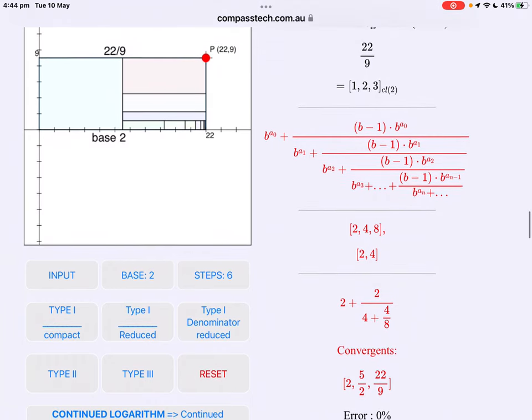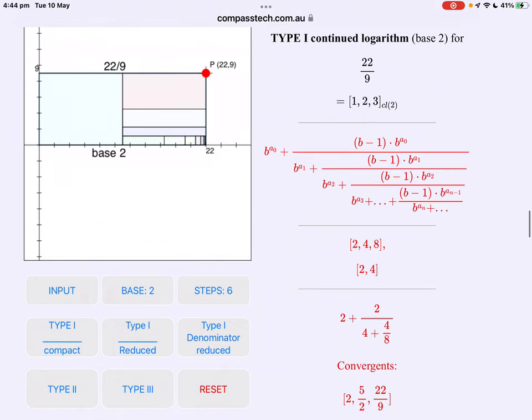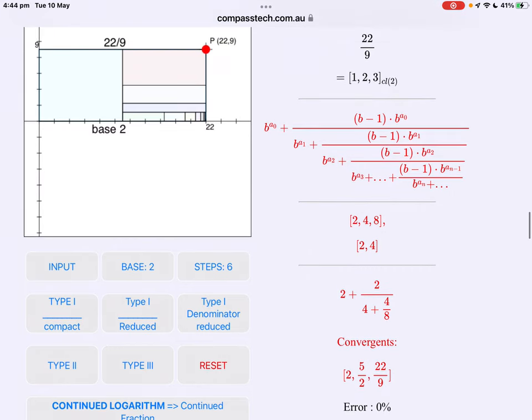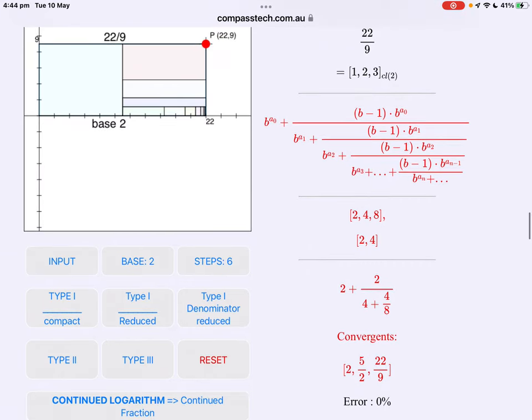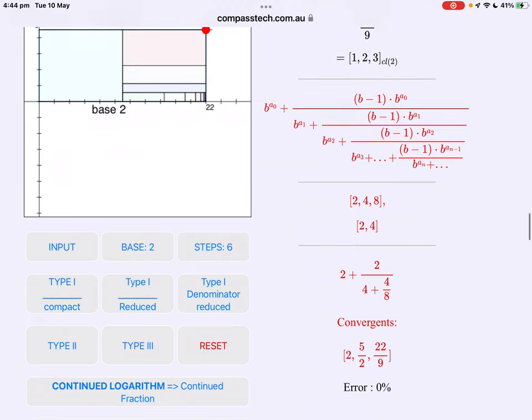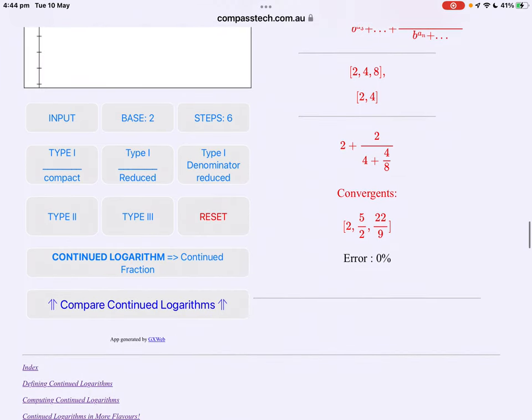So our type 1 continued fraction, following Gosper's algorithm closely, leads us to list 2, 4, 8. Each number in the 1, 2, 3, base 2 expansion becomes 2, 2 to the 2, 2 squared, 2 cubed, 2, 4, 8. They're our numerator terms and our denominator terms. And we see how quickly this converges.